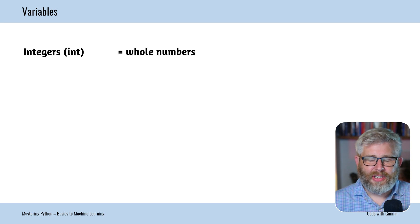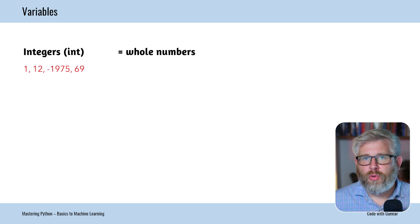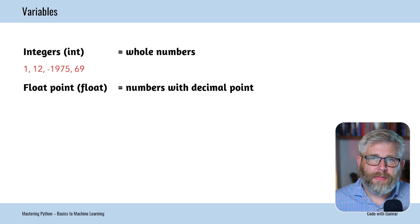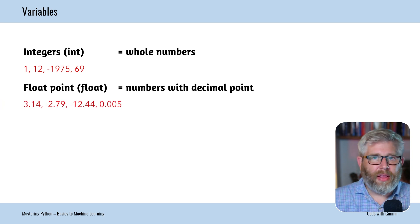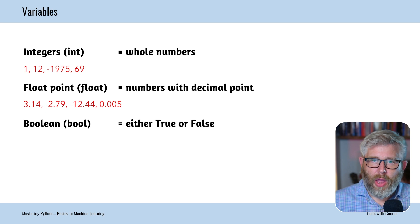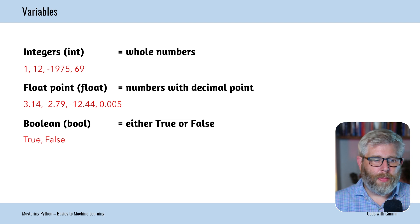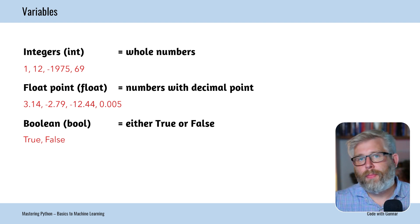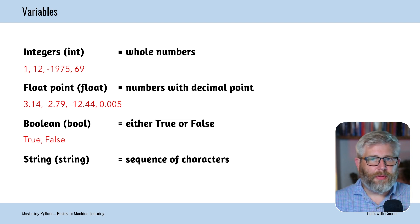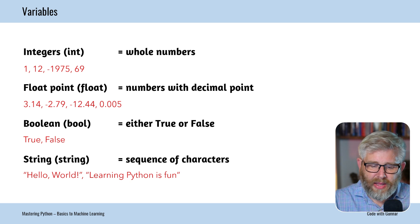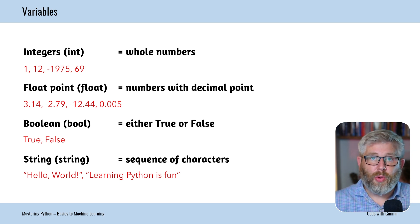We have four main built-in data types in Python. First, integers — whole numbers like -1, 12, 1000, or 975. Next, floating point numbers or floats — numbers with a decimal point, for example pi (3.14) or -12.44. Then we have booleans, which hold either True or False — often used when testing a condition, such as whether somebody is older than 18. Finally, strings — a sequence of characters encased in quotes, like 'Hello World' or 'Learning Python is fun'.